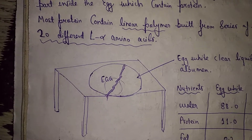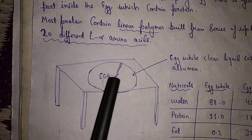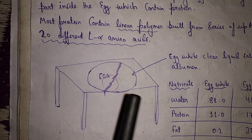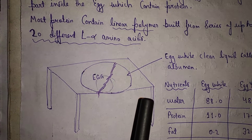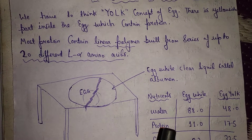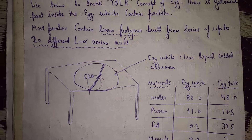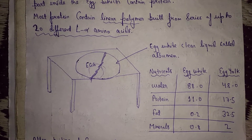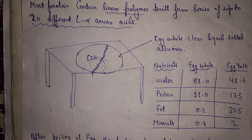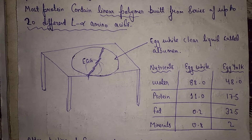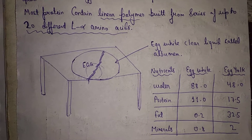Suppose this one is the egg. Inside the egg, there is a yellowish part and some white part is also there. The white clear liquid is called albumin. Here is some nutritional value of the egg — how much water, protein, fat, and minerals are contained in the egg white and the egg yolk.